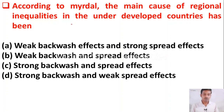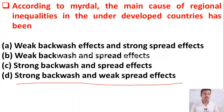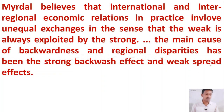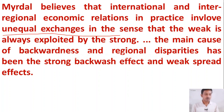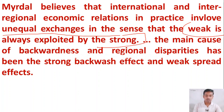The next question: according to Myrdal, the main cause of regional inequalities in underdeveloped countries is — option A: weak backwash and strong spread effect, option B: weak backwash and spread effect, option C: strong backwash and spread effect, option D: strong backwash and weak spread effect. Option D is the right answer. According to Myrdal, the weaker section of the economy is always exploited by the stronger section, mainly due to strong backwash effect and weak spread effect.